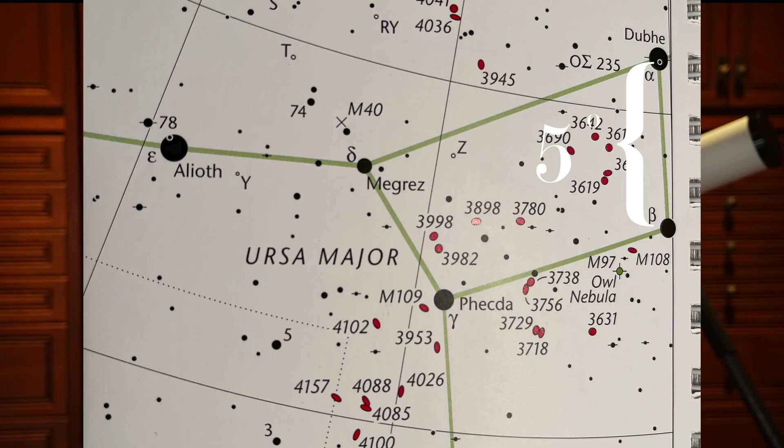Once you know the orientation of your finder scope and your telescope — and unless they're both erect images — they'll be different from what you see on the page of your star chart. Next, you need to know what the field of view is for both the finder scope and the telescope. You can measure the field of view of your finder scope by pointing it at two stars that just fit inside the field of view. You could use the two pointer stars of the Big Dipper, Dubhe and Merak, which are almost exactly five degrees apart. If they fit just inside your finder scope's field of view, then your finder scope shows a five-degree field of view, which is generally what most finder scopes will show.